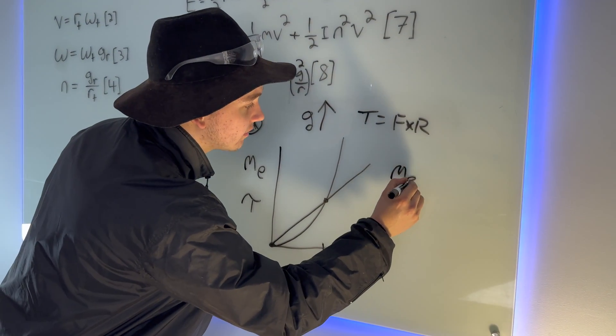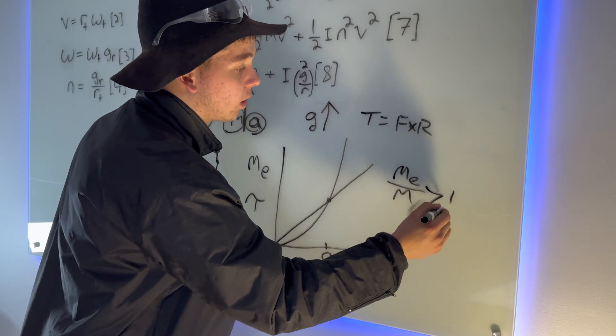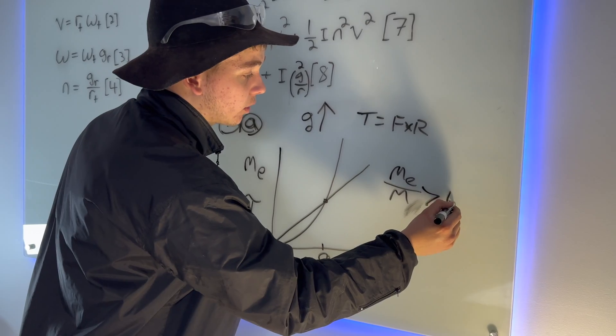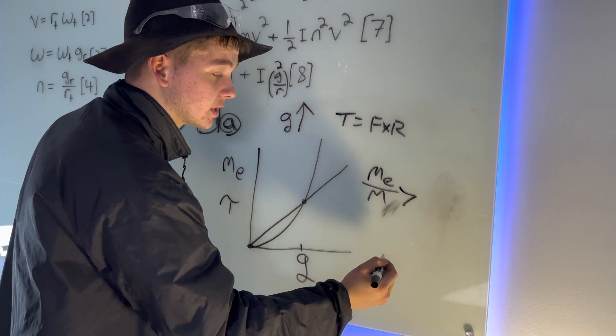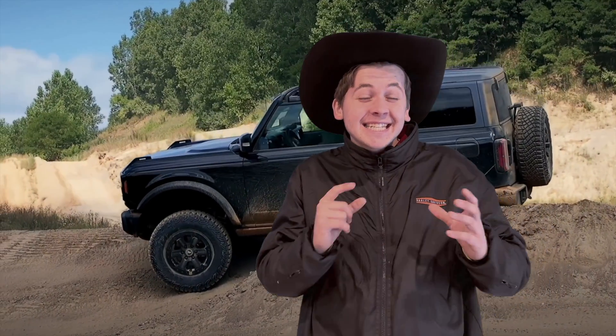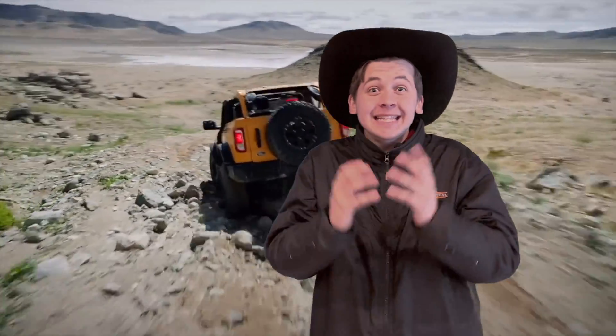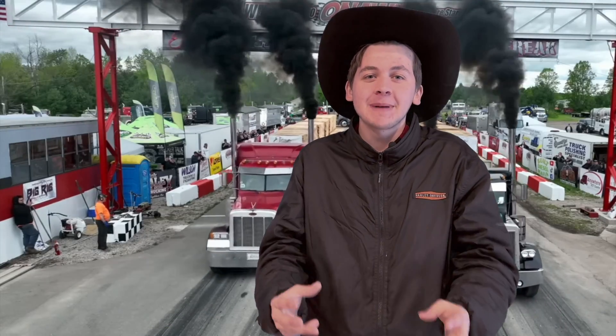The ratio of your equivalent mass to your gravitational mass ends up climbing and climbing because of that n². You can end up with ratios like 30. By the time you get to a crawl ratio you'd find in a Ford Bronco, the equivalent mass of the flywheel alone is 60,000 to 70,000 pounds. We're talking about an 18-wheeler going down the road — from the perspective of your engine, that's how much the flywheel weighs. That's incredible.